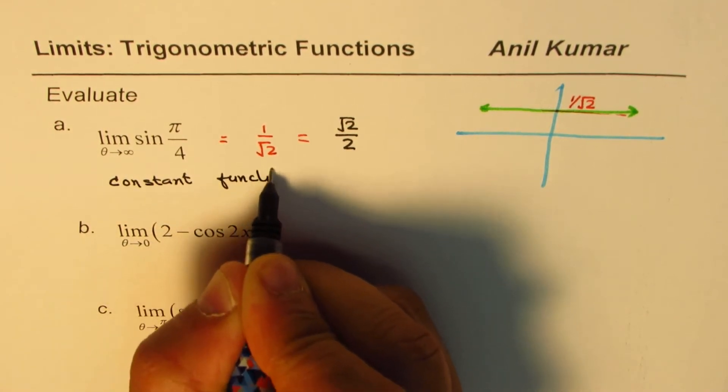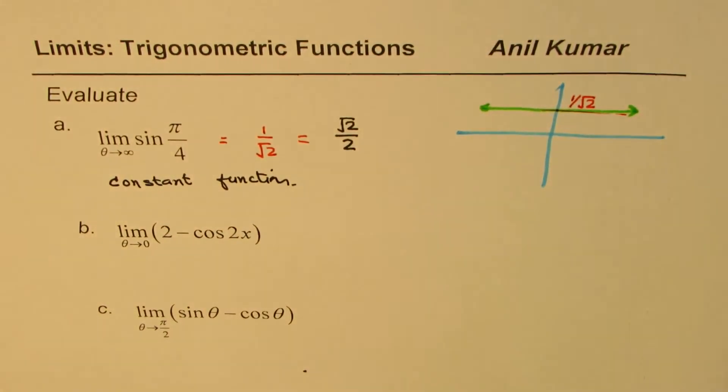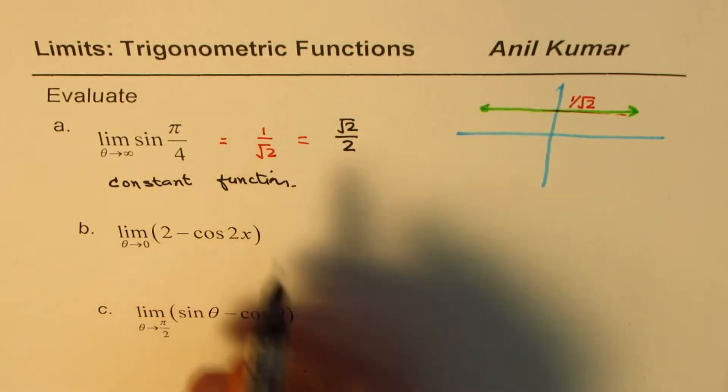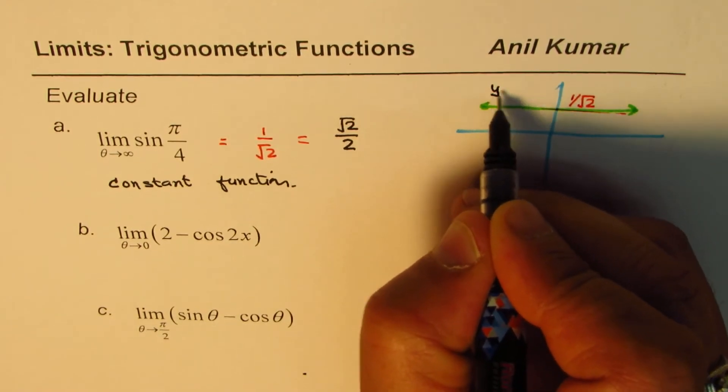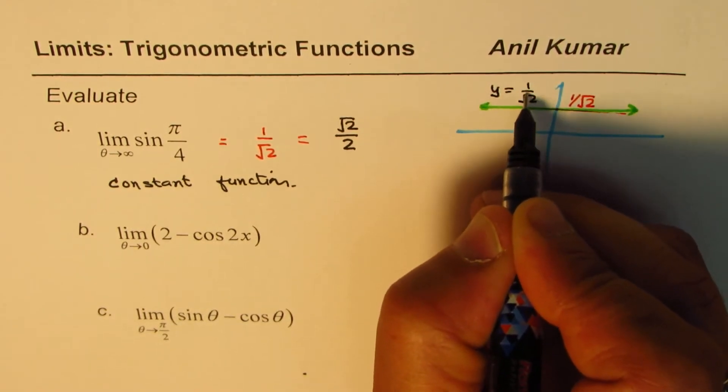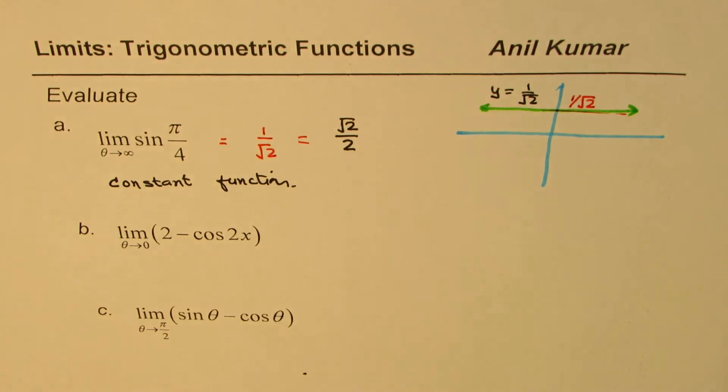Looks like trigonometric function. So it is a trigonometric function, but for a specific value. So basically it is y equals to 1 over square root 2. So that gives you the limit for this particular function. I hope you find it interesting.